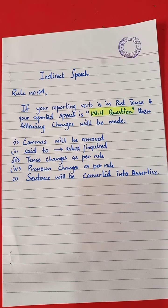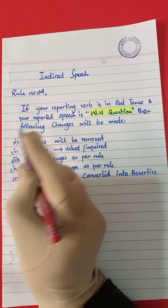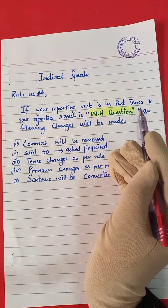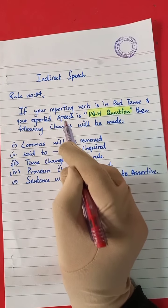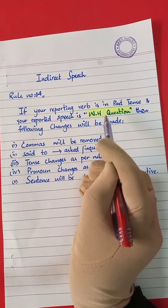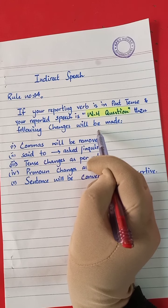You cannot answer a WH question with just yes or no. In the last video we learned about interrogative questions — the ones that can be answered with yes or no. But in today's class we are going to learn about WH questions, which always start with WH words. So let's see what rule number four is. Rule number four states: if your reporting verb is in past tense and your reported speech is a WH question, then the following changes will be made.